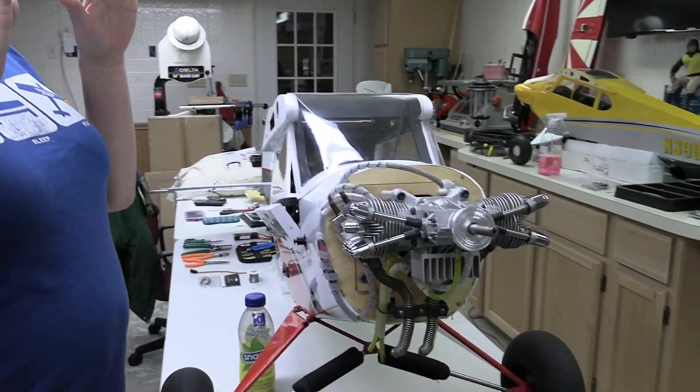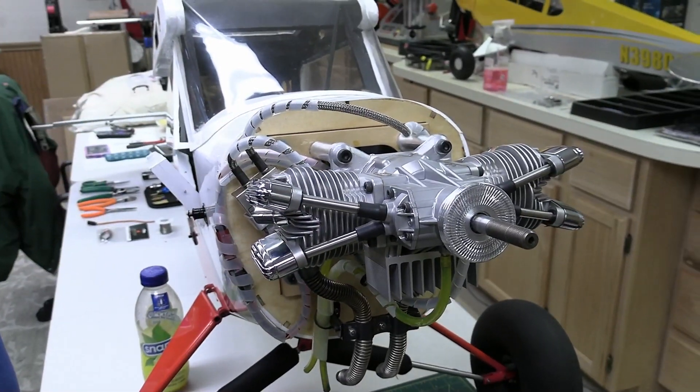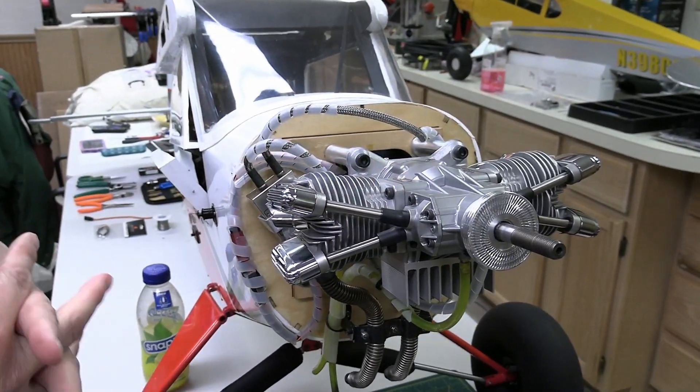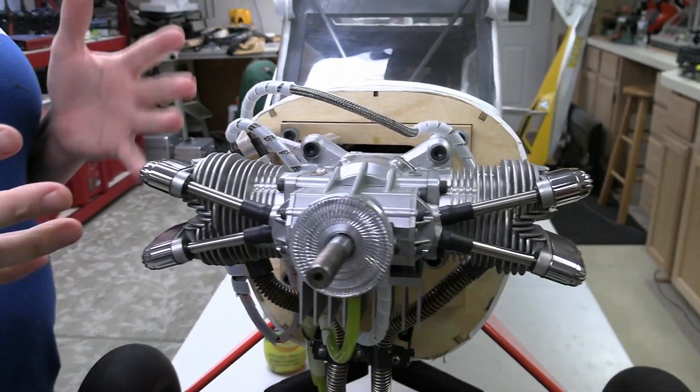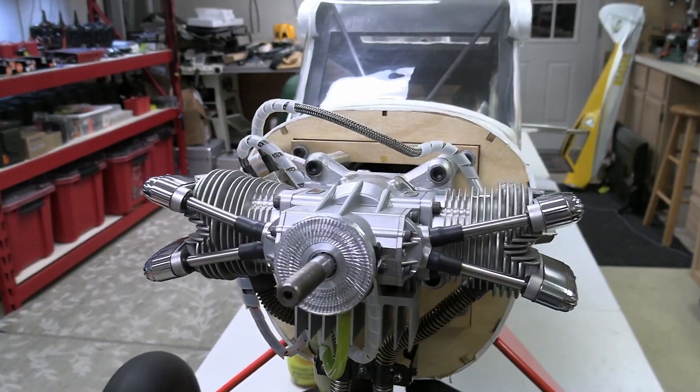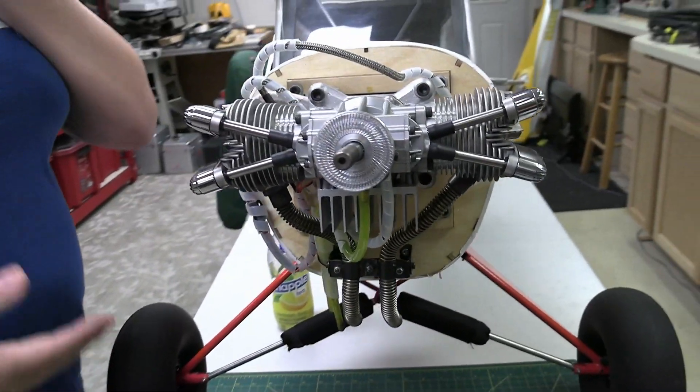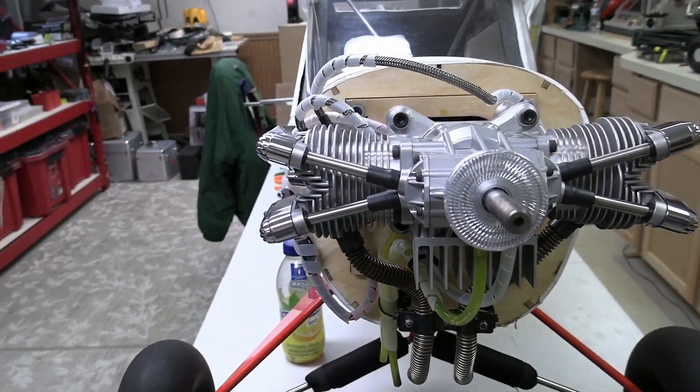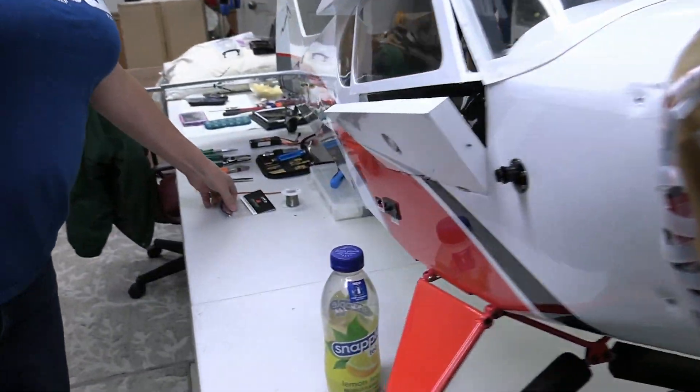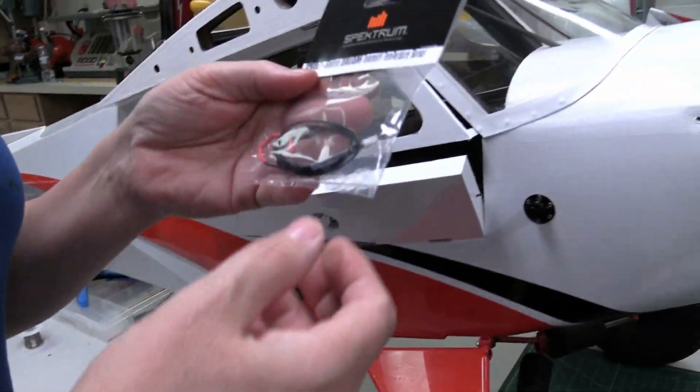I have here my Saito 60cc twin cylinder engine, and while I was trying to tune this and get the RPM up, I'm trying to figure out on the fly what the temperature is, what the RPM is. I'm using my new iX20 transmitter and I don't have telemetry information coming from the heat of the cylinder, so I don't know if it's getting hot enough or too hot.